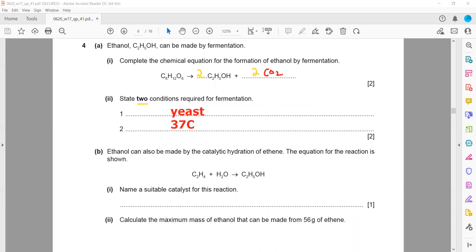Ethanol can also be made by catalytic hydration of ethene. Ethene plus steam will give ethanol. Name a suitable catalyst for this reaction. We use phosphoric acid as a catalyst.